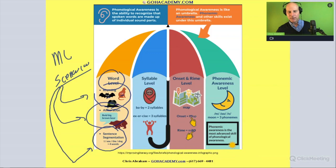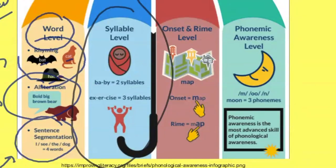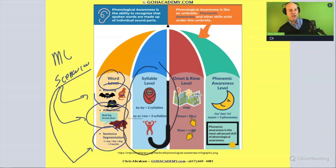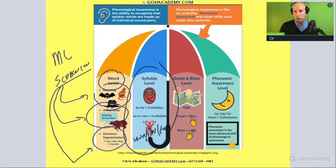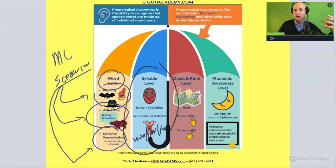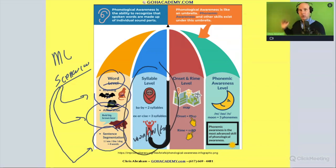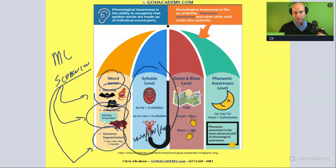At the syllable level, the child claps out the syllables they hear in a word. For example, 'how many sounds do you hear in the word baby?' — clap it out: ba-by. Or 'exercise' — ex-er-cise. Or 'wonderful' — won-der-ful. Notice these are all oral language activities. They're auditory — there doesn't have to be any print. A teacher doing a read-aloud doesn't need to show the word; children simply hear it. All these activities exist purely in sound, in spoken language.